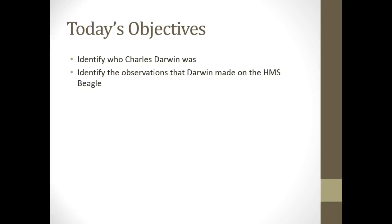Today we identified Charles Darwin, covering a bit of his background and different career paths, and his role as a naturalist. We identified observations he made on the HMS Beagle, including the tortoises of Hood and Isabella Island. We also briefly discussed the Galapagos, which will be covered further in another tutorial. If you have any questions about Darwin's voyage on the HMS Beagle, please bring them to class.